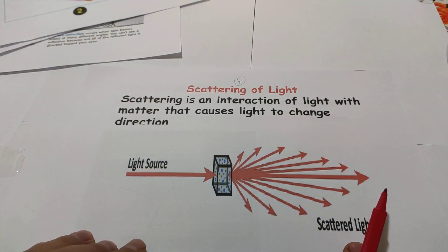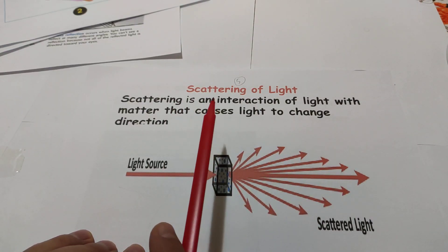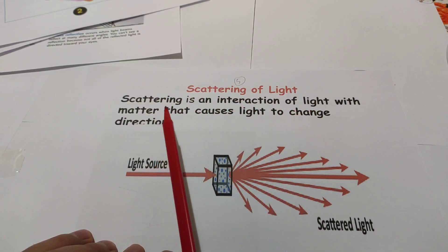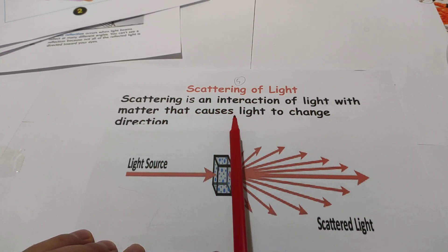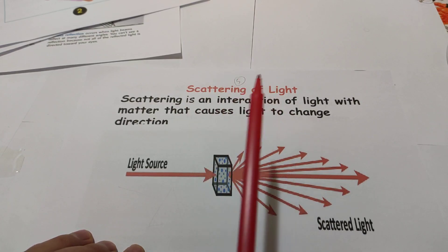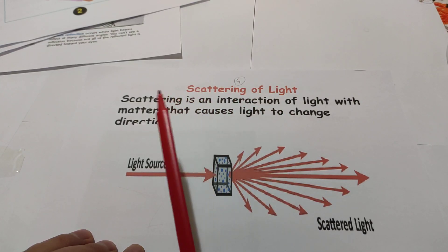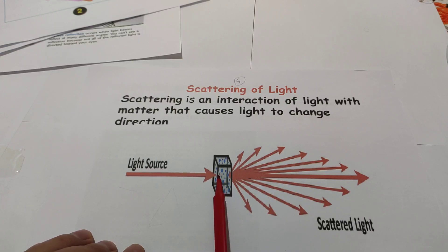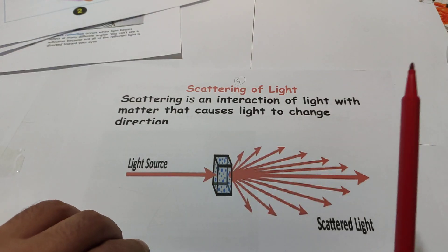Scattering of light is an interaction of light with matter that causes a change in direction. The light comes into the object and the object changes the direction of the light — that is scattering.